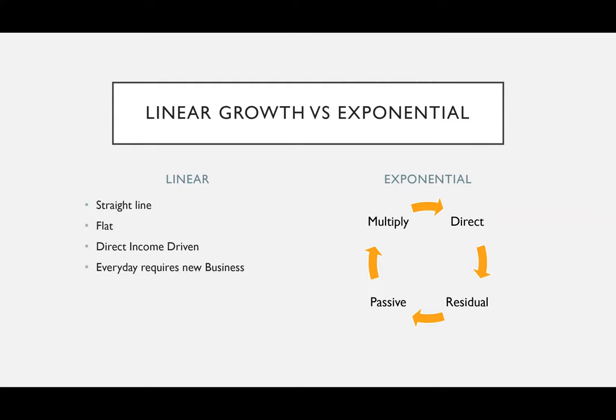Exponential growth includes all three types of income: direct, residual, and passive. Because it's a form of leverage, it is multiplying — not adding. If you had a choice, would you rather have something adding or multiplying? Multiplying is exponential growth by nature. Remember the three golden rules of how to become financially independent — the law of multiplicity is the second rule. Instead of linear, you want exponential growth by increasing client base, volume per transaction, and frequency of transactions.